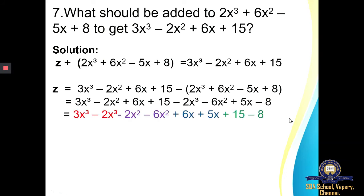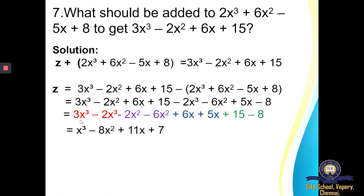I have combined them and then simply simplified. The answer is X cube minus 8X square plus 11X plus 7. This is what has to be added to the given polynomial in order to get the required result.